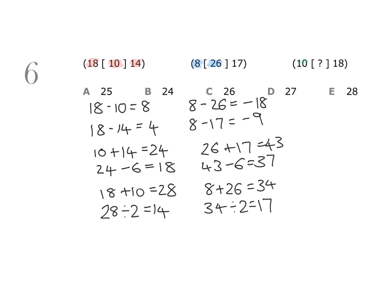Now looking at the last group, we have 10 and 18, but we don't have the middle number. That just means we need to work in reverse, which is fine.